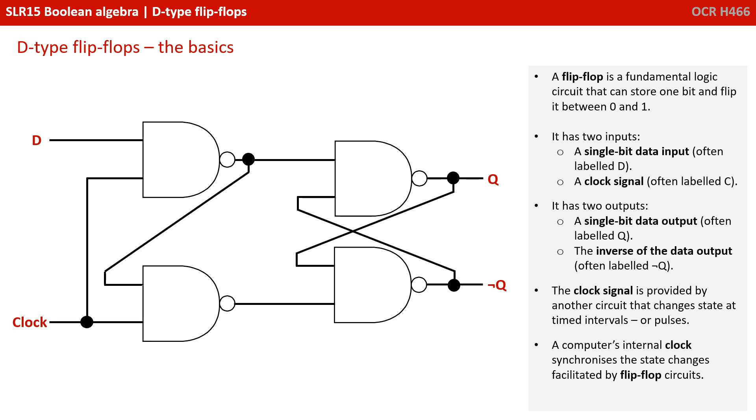The clock signal is provided by another circuit that changes state at time intervals or pulses. A computer's internal clock synchronizes the state changes facilitated by flip-flop circuits.